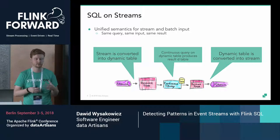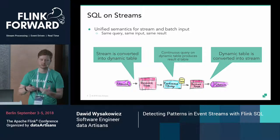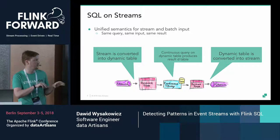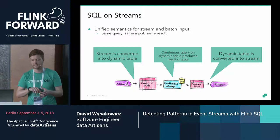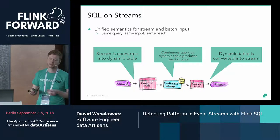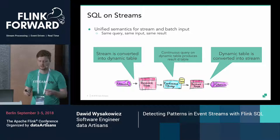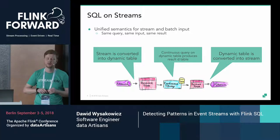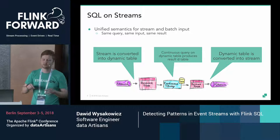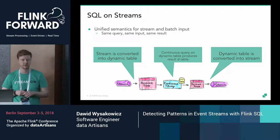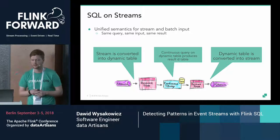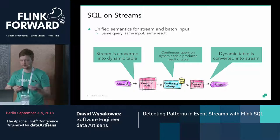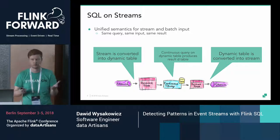How dynamic tables work is that the input stream is converted into an ever-growing, ever-appending table on which we can execute continuous queries. The result of continuous queries is yet another dynamic table. While executing queries we operate on dynamic tables, and only when we need to output and materialize results do we convert the dynamic table back to a stream — for example, writing it to some external system.